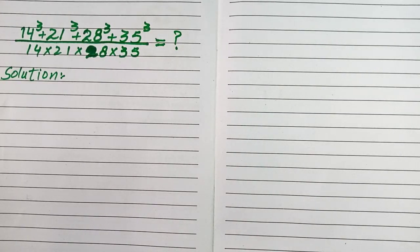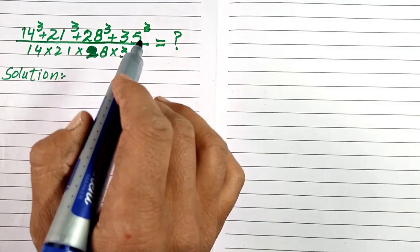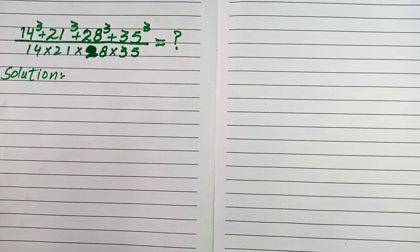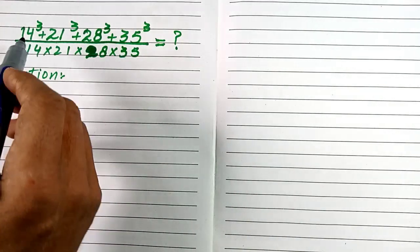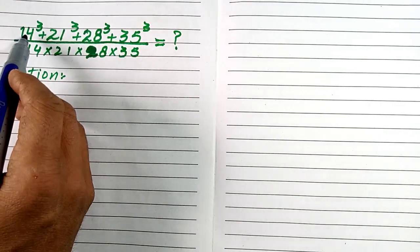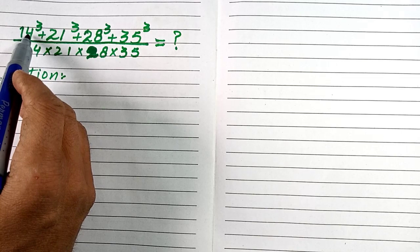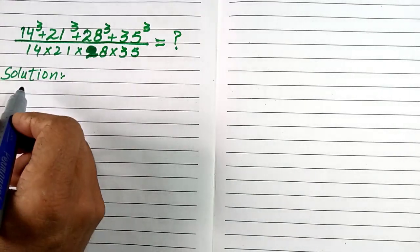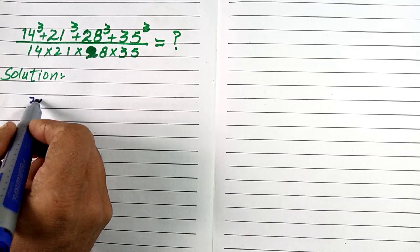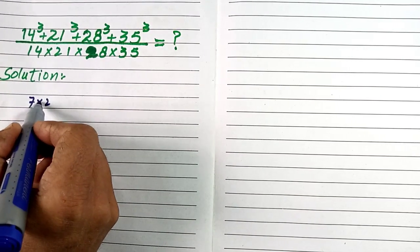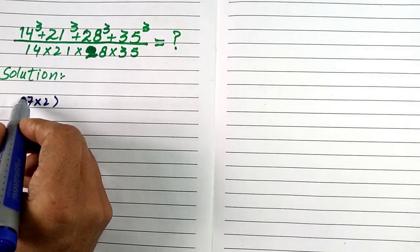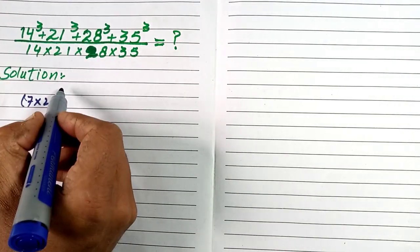Hello everyone, welcome to another video. In this problem we are finding the exact solution of this question without using any calculator. First of all, we can see that in the place of 14 we can write 7 × 2, which is equivalent to 14, and the power is 3.